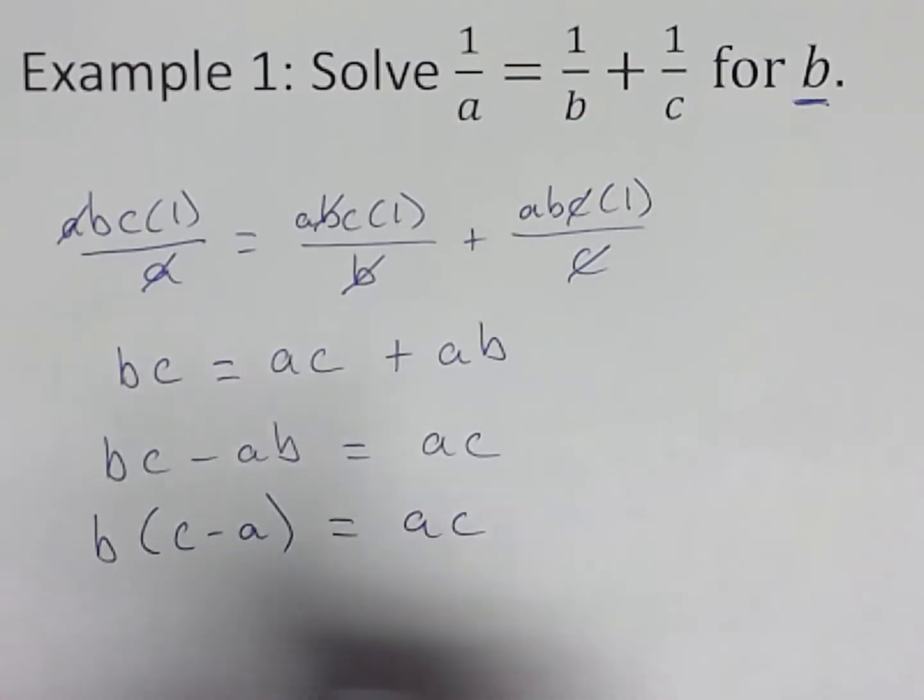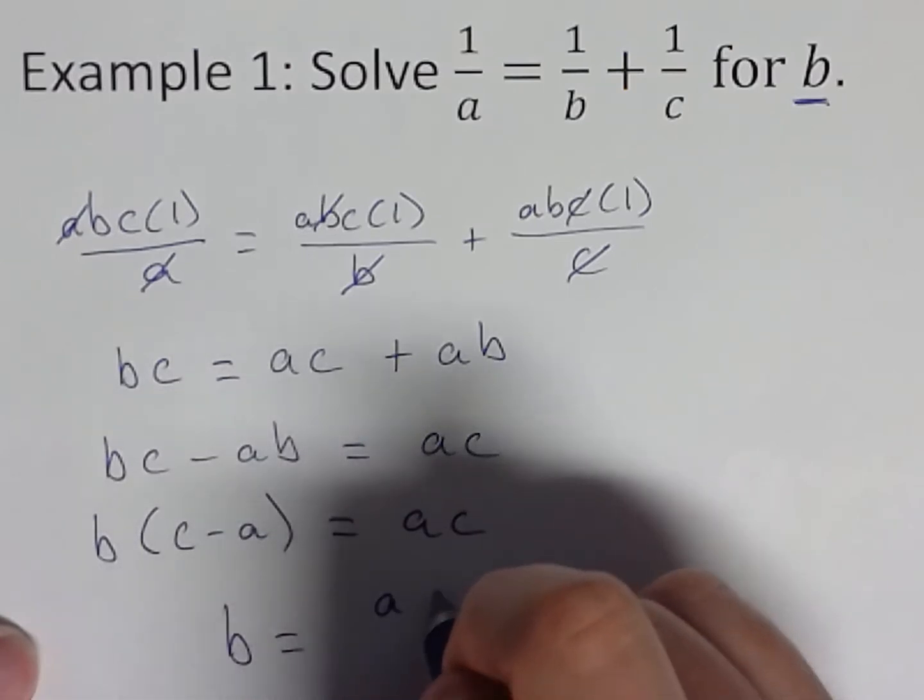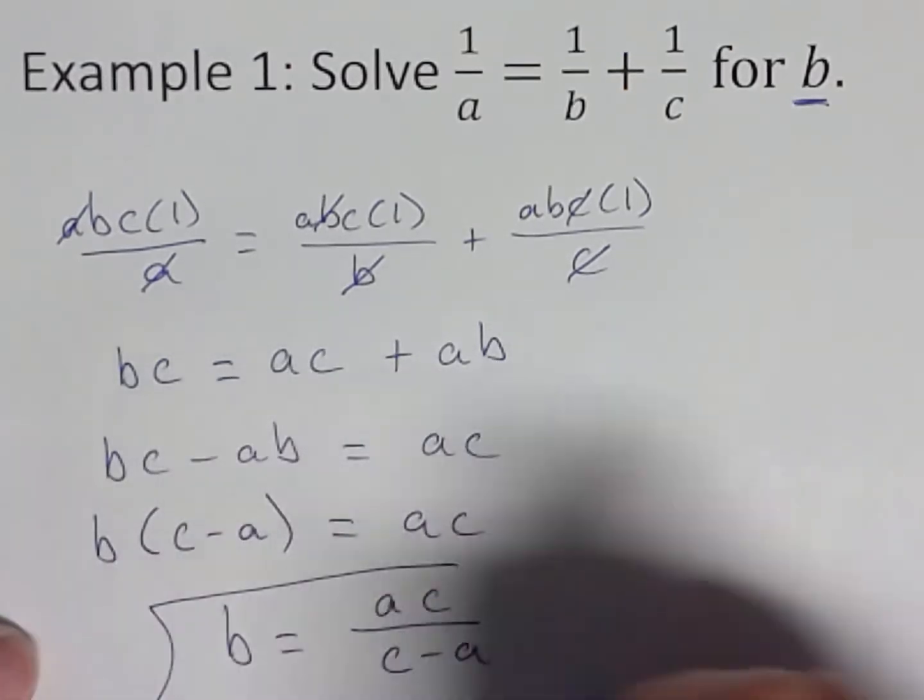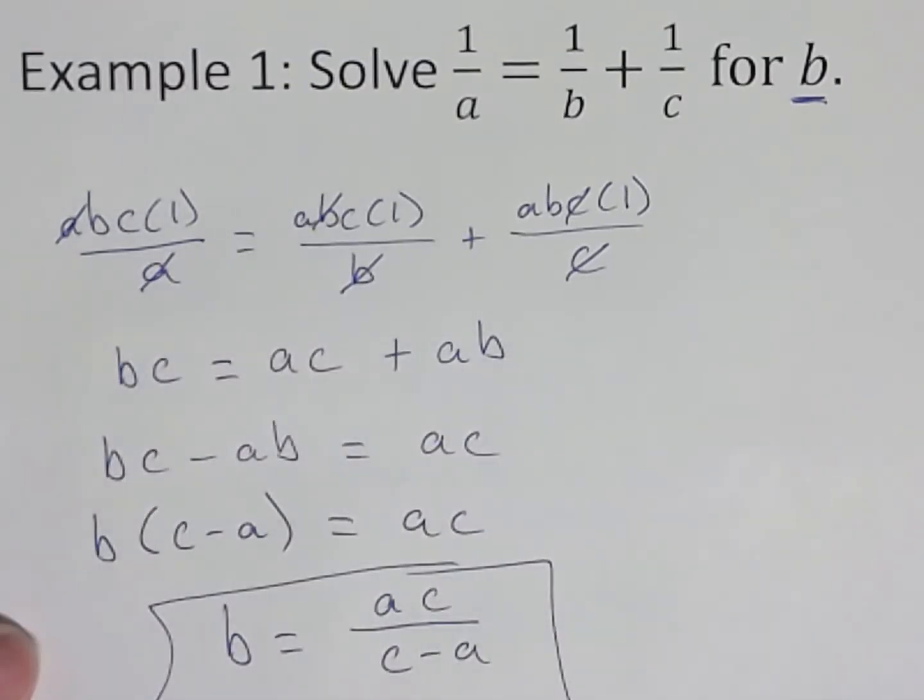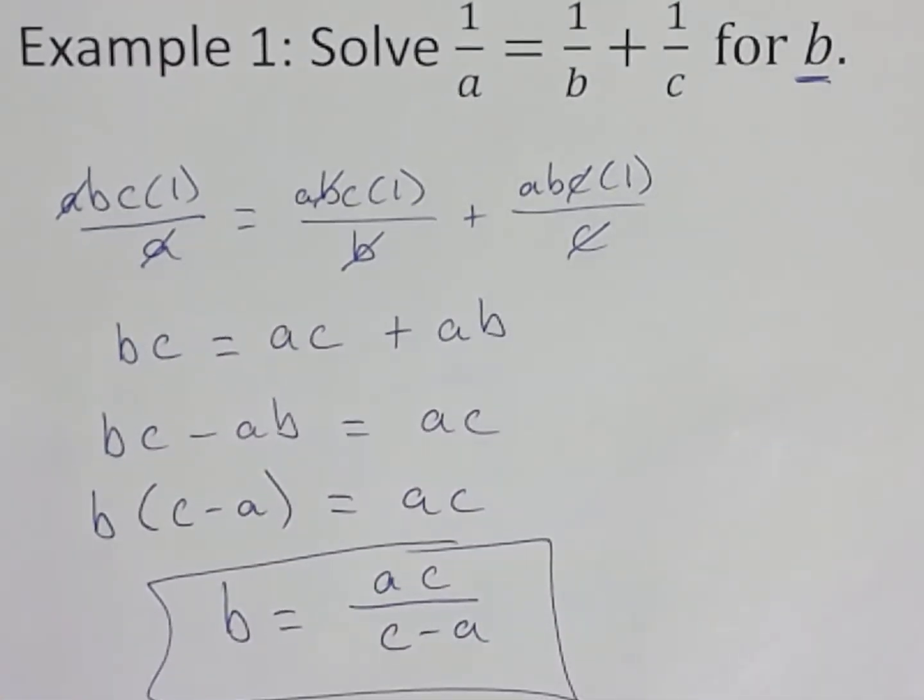One last step now. Hey, just divide C minus A. So B equals A, C over C minus A. Hey, we did it. We isolated our variable B.